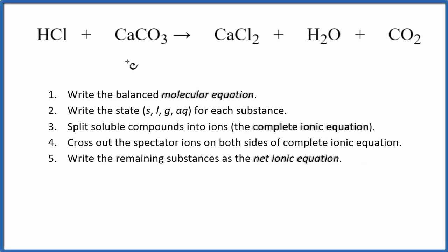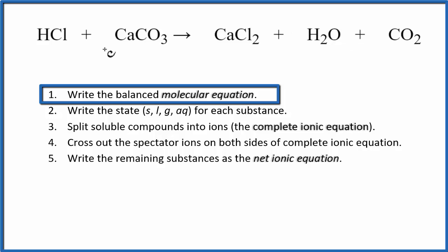To write the net ionic equation for HCl plus CaCO3, we'll follow these steps. First, we need to balance our molecular equation. This is our molecular equation, which is balanced with a 2 in front of the HCl.